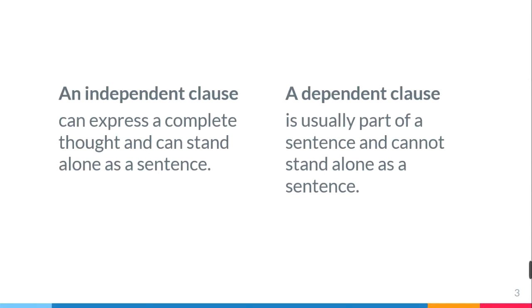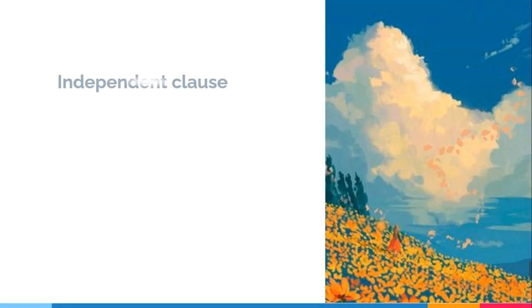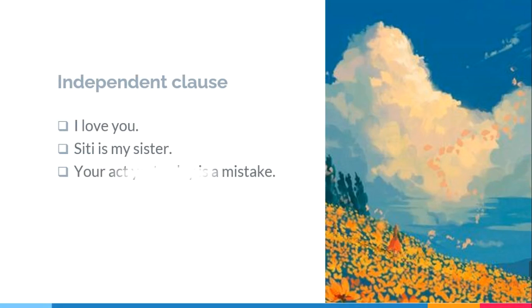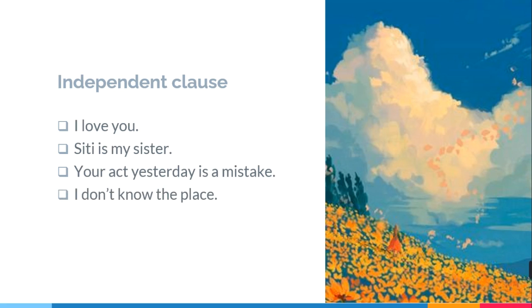These two clauses will be clearly understood by looking at their respective examples. Here are the examples of independent clause: 'I love you,' 'City is my sister,' 'Your egg yesterday is a mistake,' and 'I don't know the place.' When you have this formation of clauses — meaning they are also sentences — you can put a period after each clause.